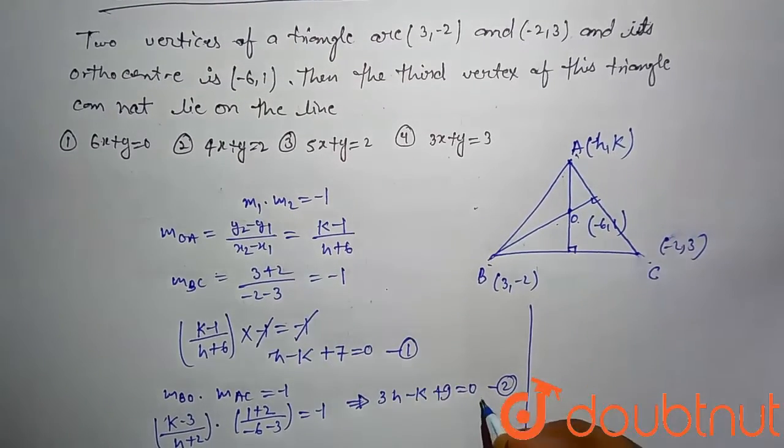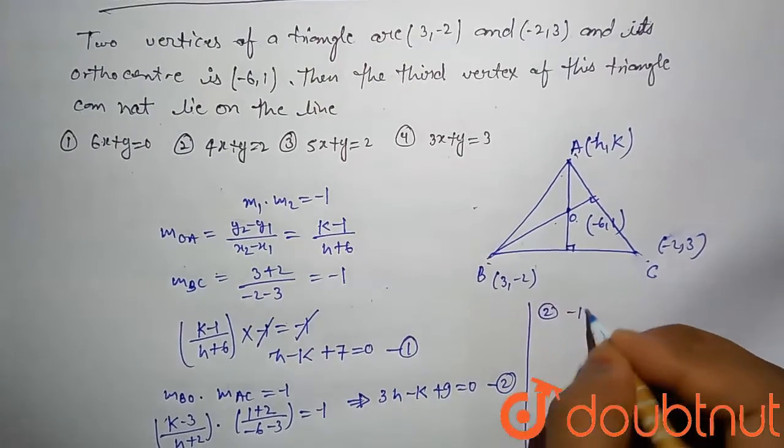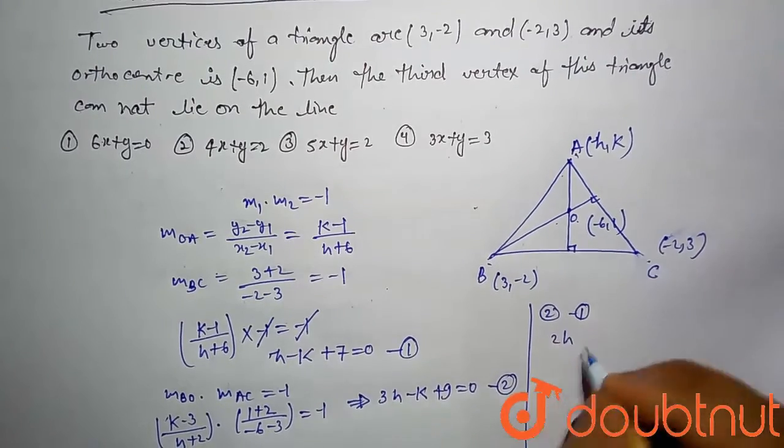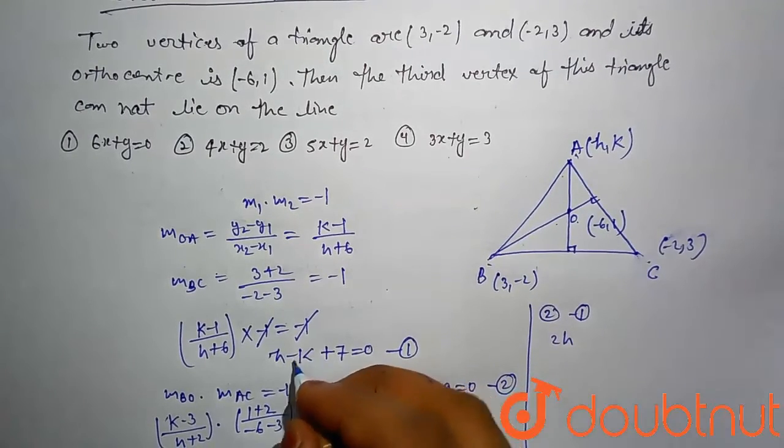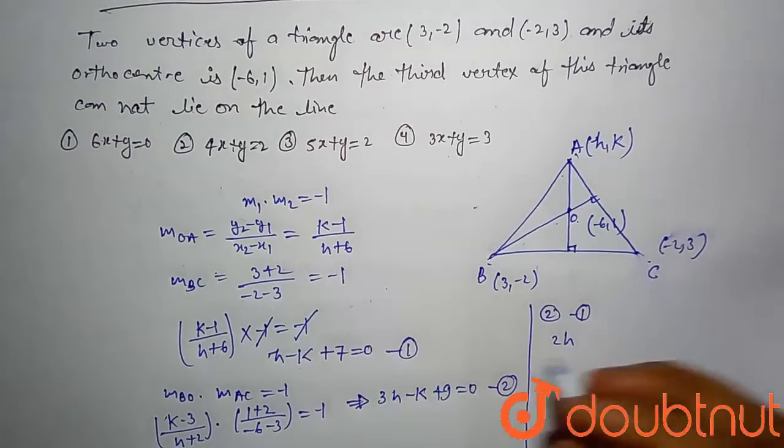If you solve first and second, just second minus first. If you compute then 3h - h which is 2h, minus k and minus minus plus k which cancels out, 9 - 7 which is plus 2 = 0.